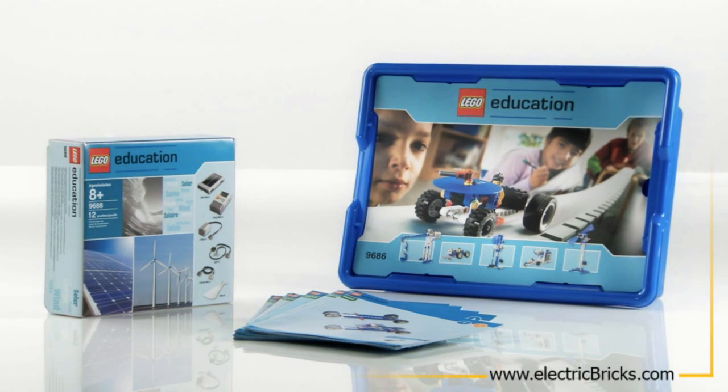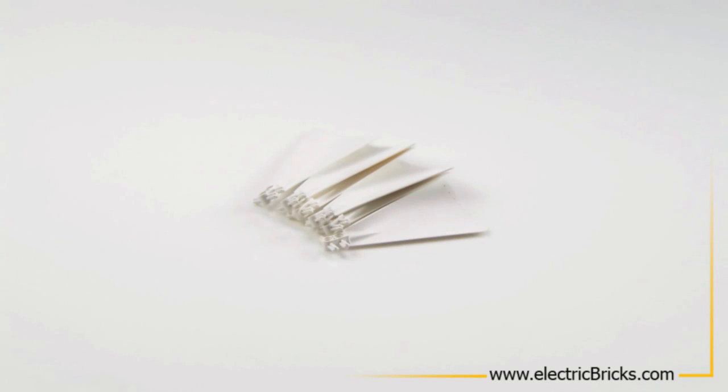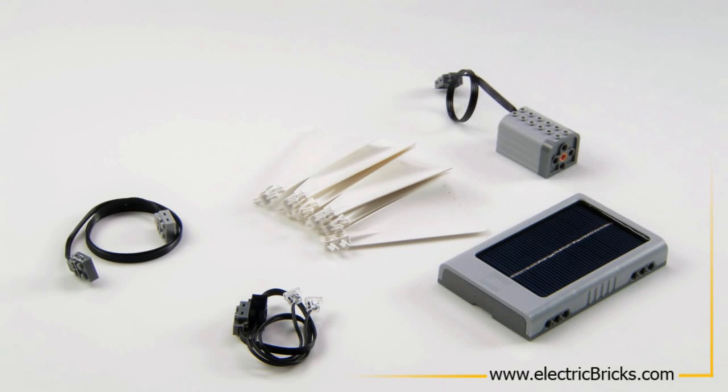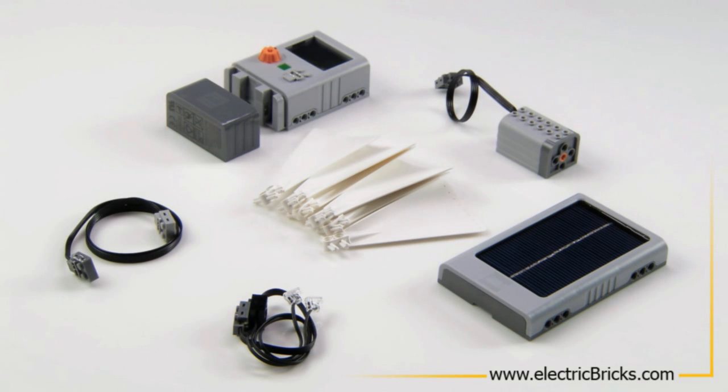As well as building instructions, the add-on set contains blades, a wire, LED lights, a LEGO solar panel, a LEGO e-motor, an energy storage and an energy display.